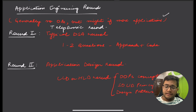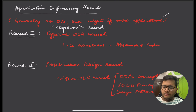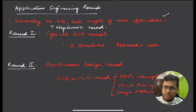After a telephonic round, Round 1 is majorly a DSA-based round where you'll be asked one to two DSA problems and need to give both the approach and a written coding solution that passes all test cases. The interviewer will ask counter-questions based on your approach, expecting the most efficient solution. Round 2 is an Application Design round testing LLD or HLD concepts, OOP principles, SOLID principles, and design patterns.